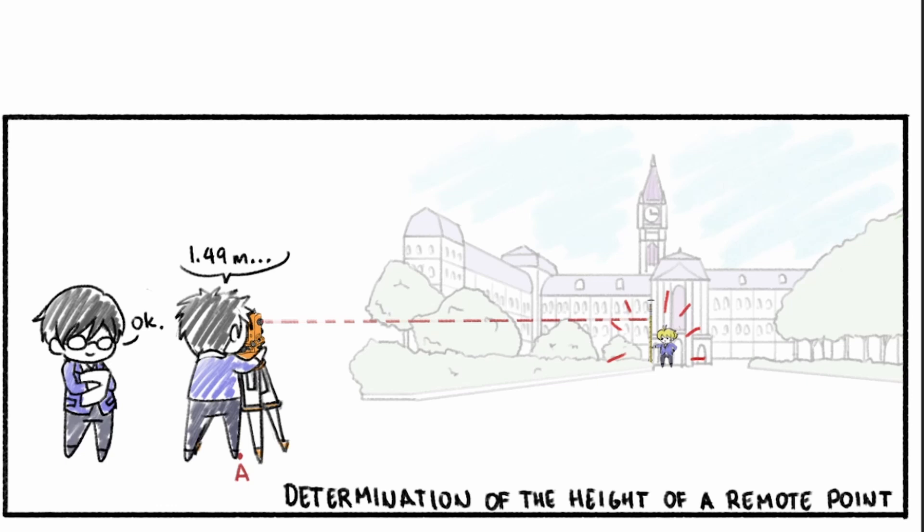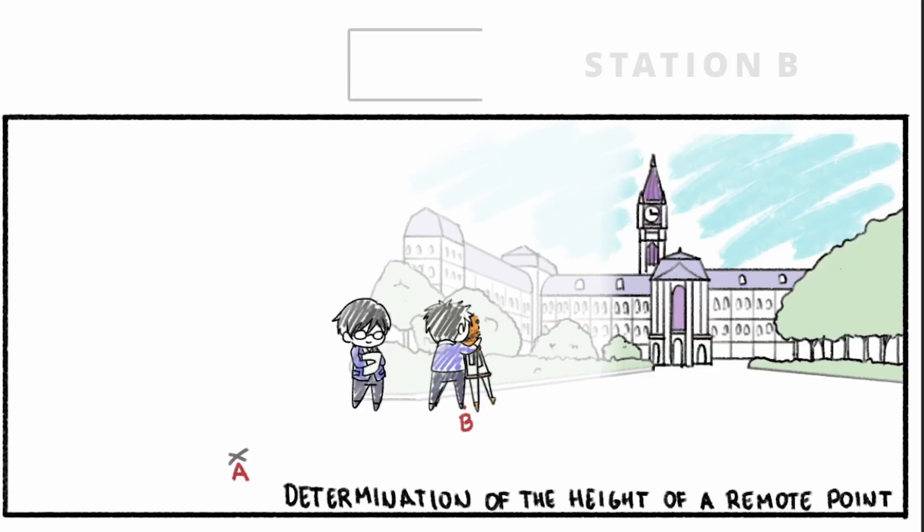Next, move the theodolite towards the tower and call it Station B. After leveling the theodolite, release the vertical clamp and rotate the telescope towards the top of the tower once more. Get the vertical angle reading on the micrometer scale and have the recorder write it down again. This time, we will label that angle as angle beta.